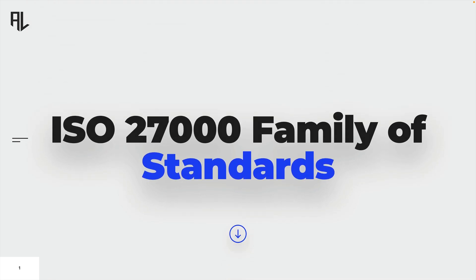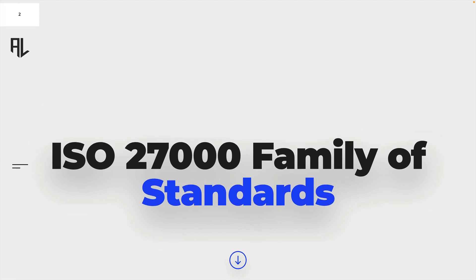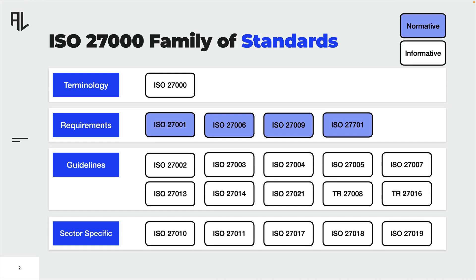In this lecture, you will get to know the ISO 27000 family of standards. The ISO 27000 family of standards is a series of interrelated standards that can be combined to form a comprehensive framework for information security management.